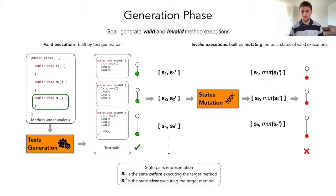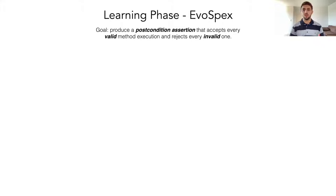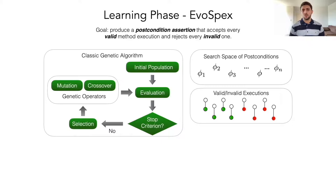Then, in the learning phase, the goal is to produce a post-condition assertion that accepts every valid method execution and rejects every invalid one. What we did here was to implement a classic genetic algorithm that evolves a population of candidate post-conditions by using classical genetic operators, such as mutation and crossover, that allow us to explore the search space of candidate post-conditions until we find the desired post-condition or we meet some stop criterion.